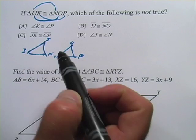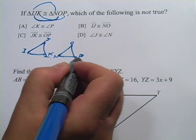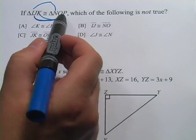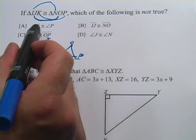Angle K is congruent to angle P. Well, K and P are corresponding parts here, so that is definitely true.